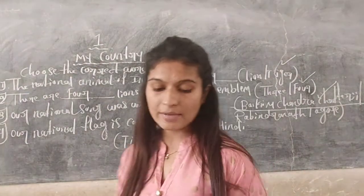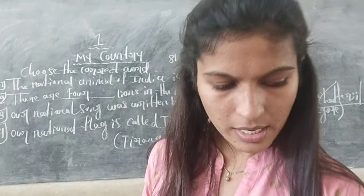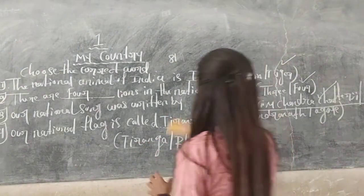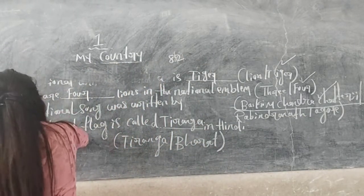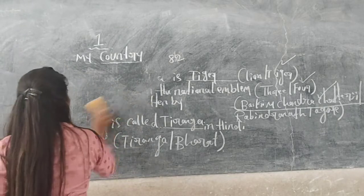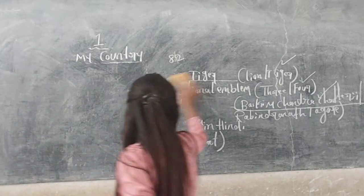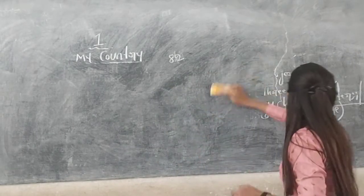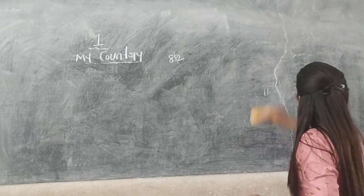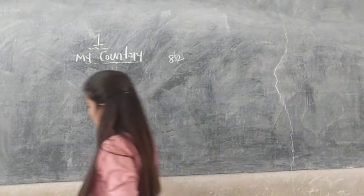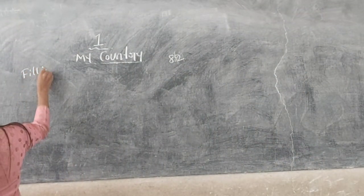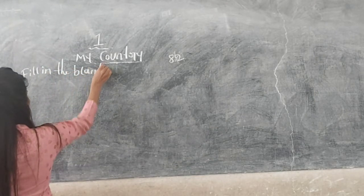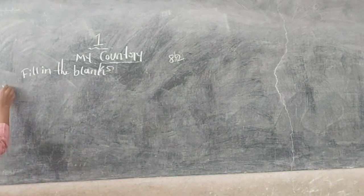Now after this, turn to page number 82. They have asked some questions here — open page number 82. Fill in the blanks is there. There are four questions, four blank boxes.